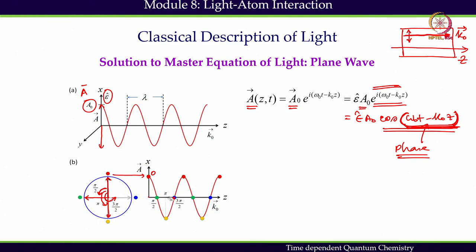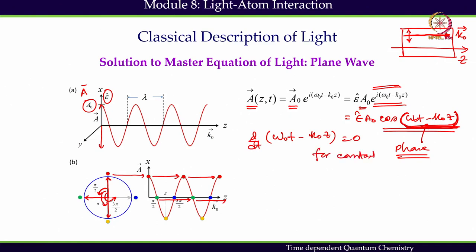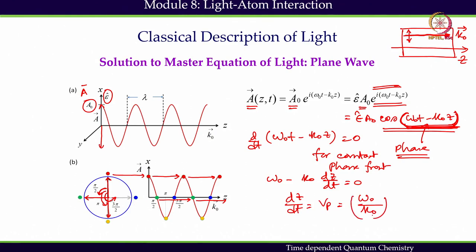The correspondence between the linear motion along z and the rotational motion of the dial shows that after a certain distance the same phase will be repeated. For a constant phase front, if we take the time derivative of the phase (ω₀t − k₀z) and set it to zero, we get dz/dt = ω₀/k₀. This is called the phase velocity — the velocity at which the constant phase front propagates through the medium.